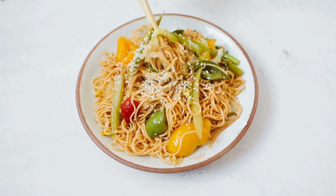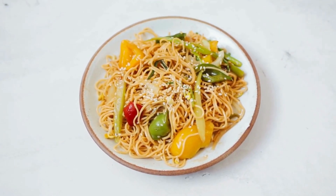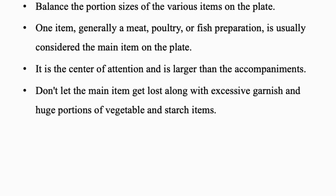Balance the portion sizes of various items on the plate. One item — generally a meat, poultry, or fish preparation — is usually considered the main item on the plate. It is the center of attention and is larger than the accompaniments. Don't let the main item get lost among excessive garnish; use appropriate portions of vegetables and starch items.